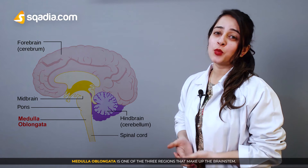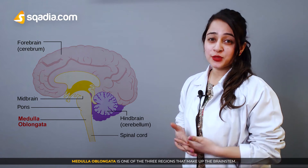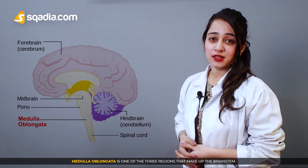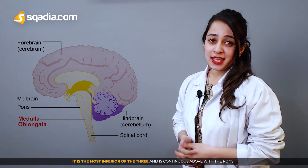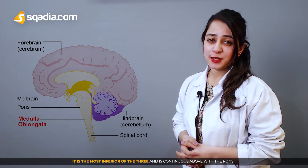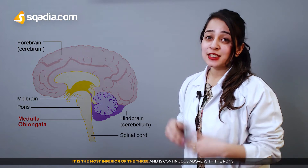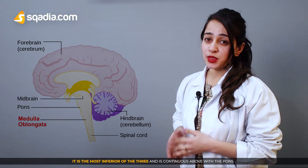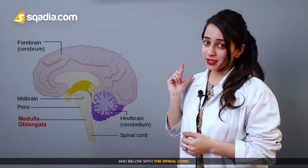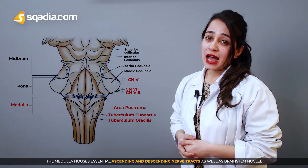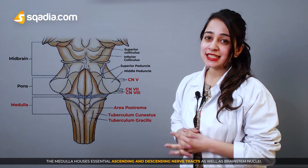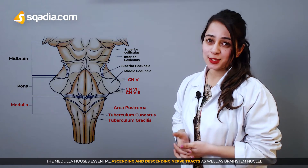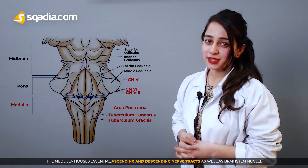The medulla oblongata is one of the three regions that makes up the brainstem. It is the most inferior of the three and is continuous with the pons above and the spinal cord below. The medulla houses the essential ascending and descending nerve tracts as well as the brainstem nuclei.